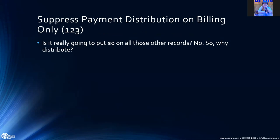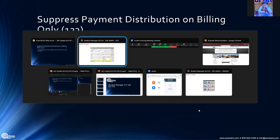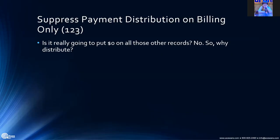Next up is payment distribution on a billing-only record. When you are enrolling a group of people in a course and one person is paying for everyone — they're not really enrolled in the course, making them a billing record — if you're applying multiple payments, it's not going to ask you to distribute that money because there's no money going to everyone else; it's all going on that one record.